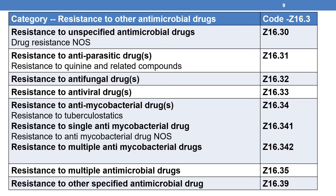Coming to the next category, resistance to other antimicrobial drugs is indicated by code Z16.3, further subcategorized as follows. Resistance to unspecified antimicrobial drugs — drug resistance NOS — should be coded by Z16.30. Note that Z16.30 is for drug resistance NOS, and we have a separate code for antibiotic NOS, so we should not confuse the two.